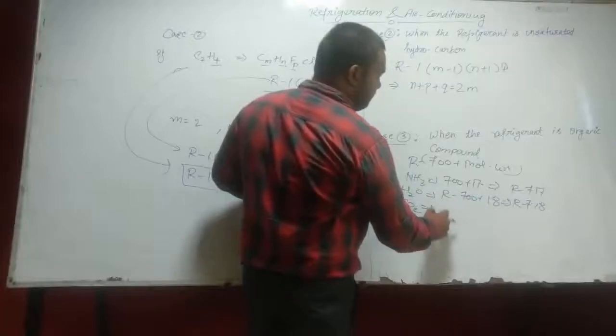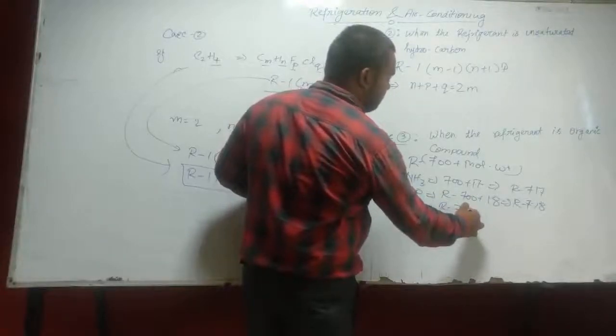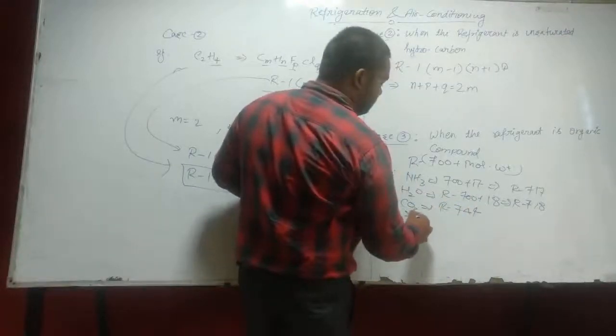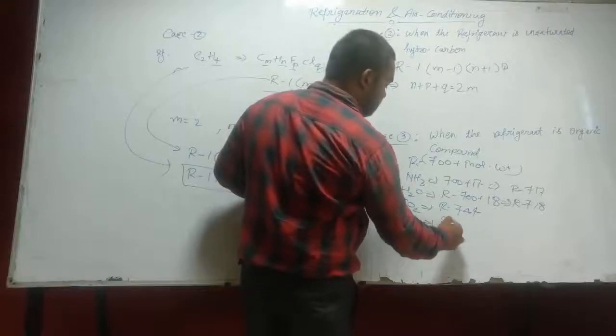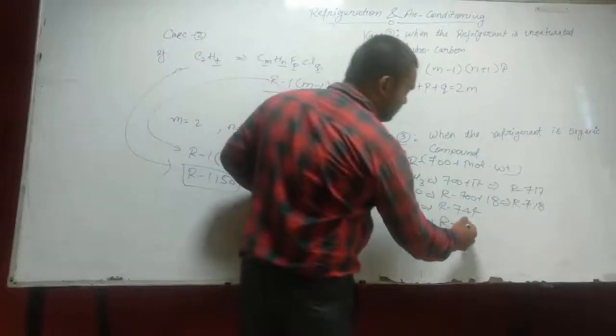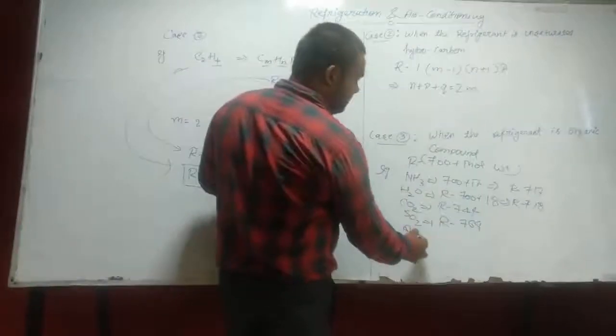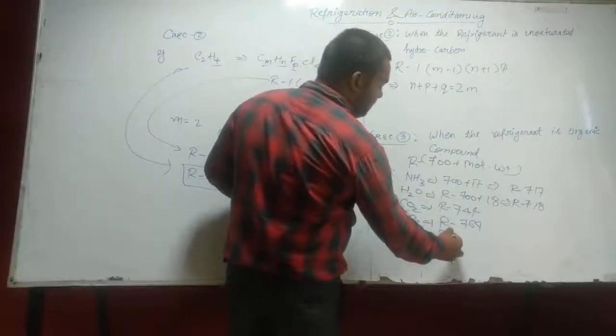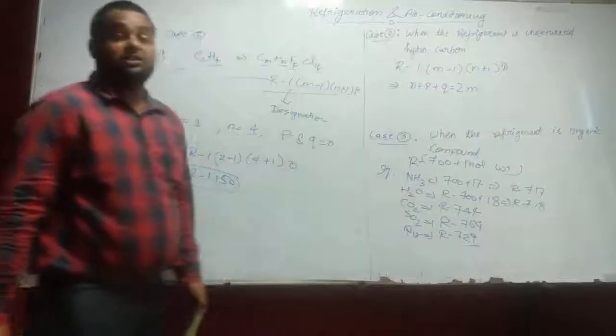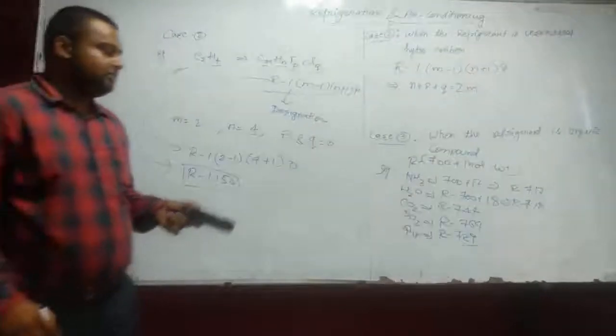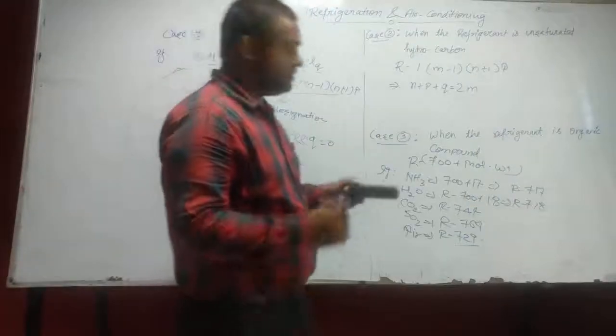For CO2, it is R744. And for SO2, R764. And for air, it will become R729. It is also used as a refrigerant in the aircraft refrigeration system.